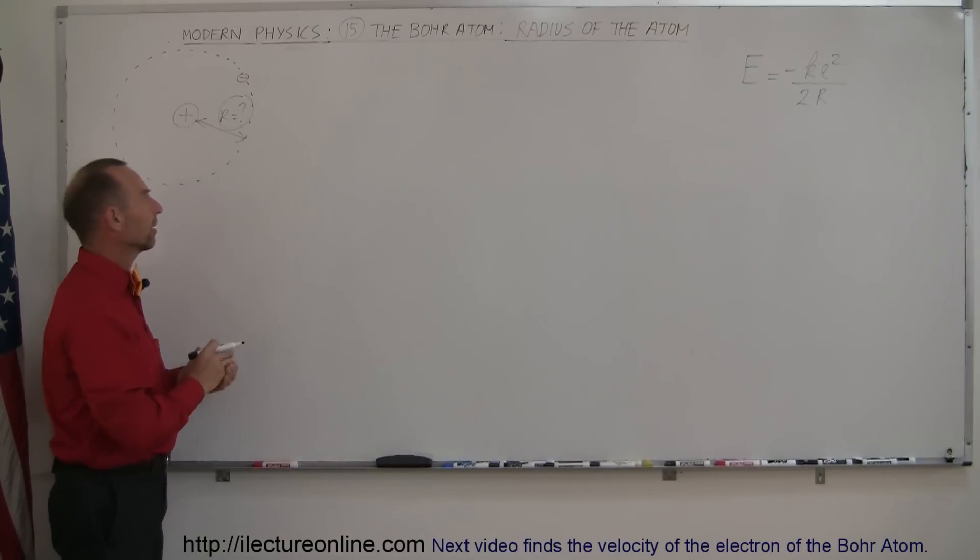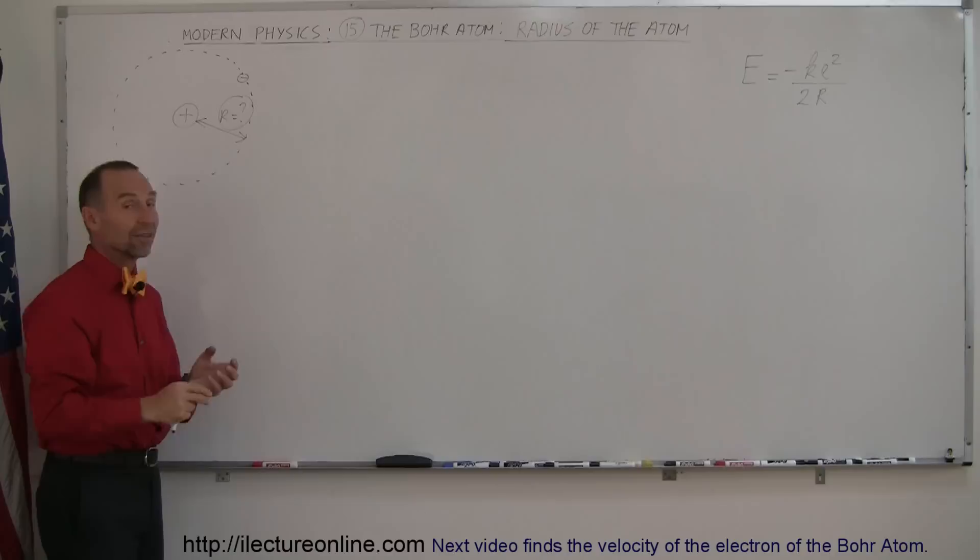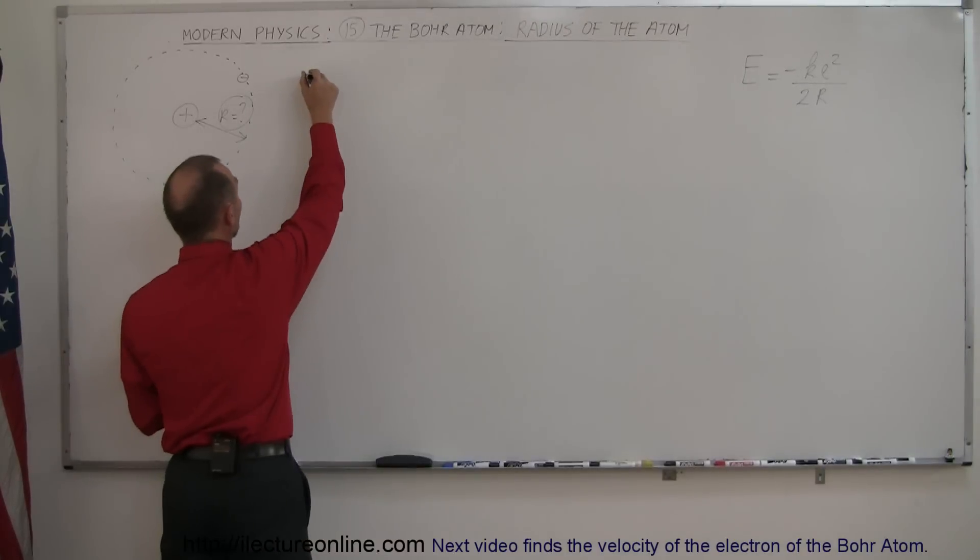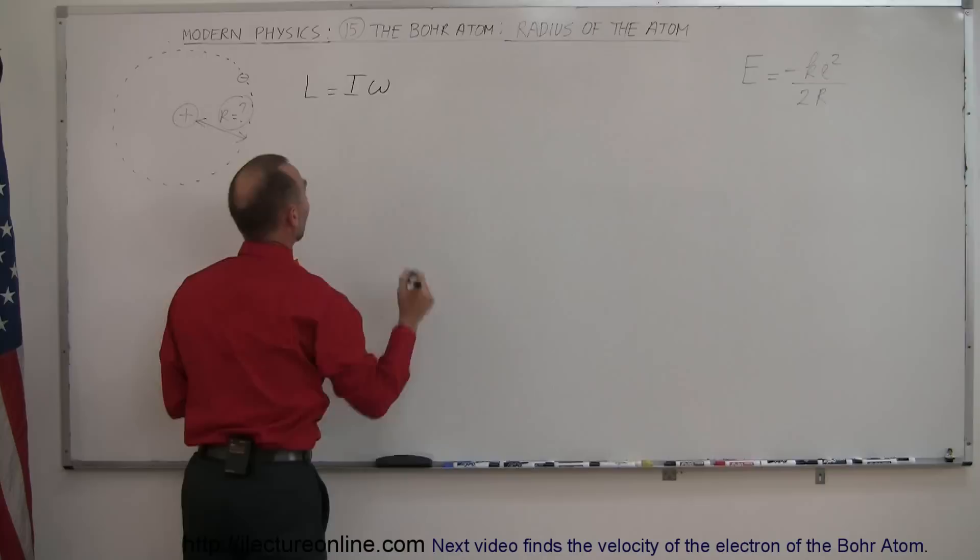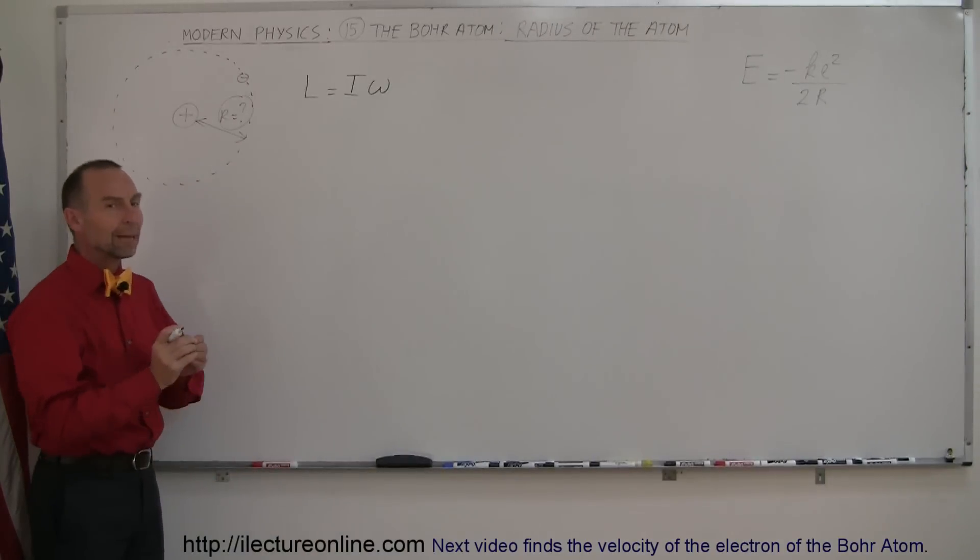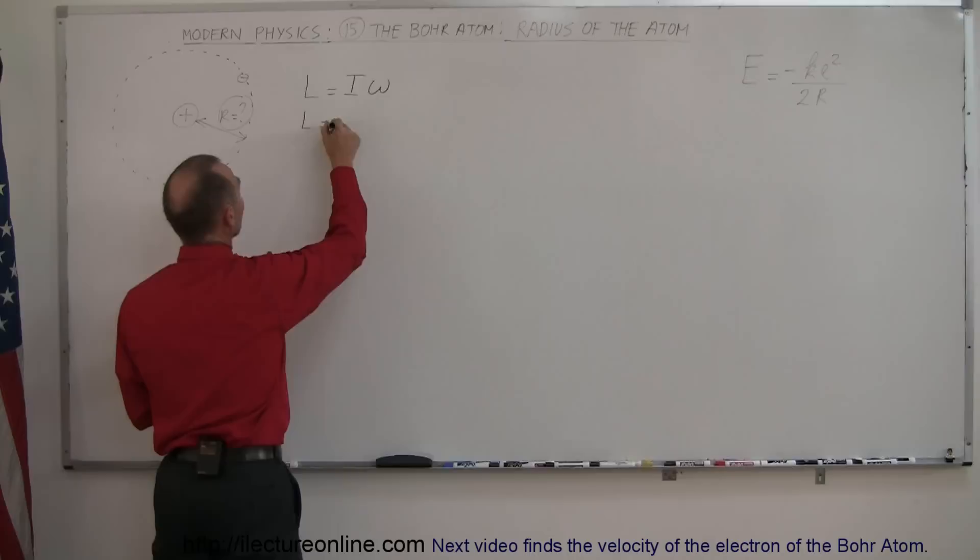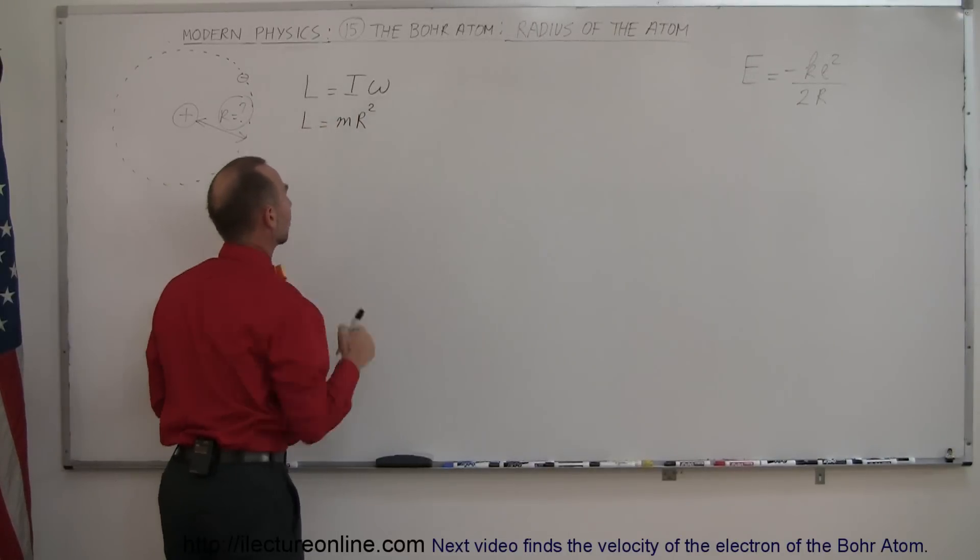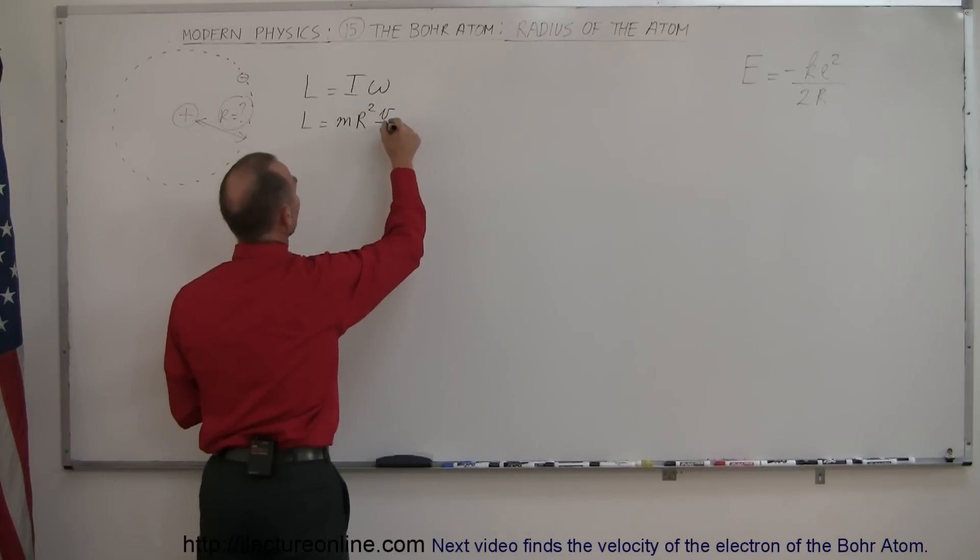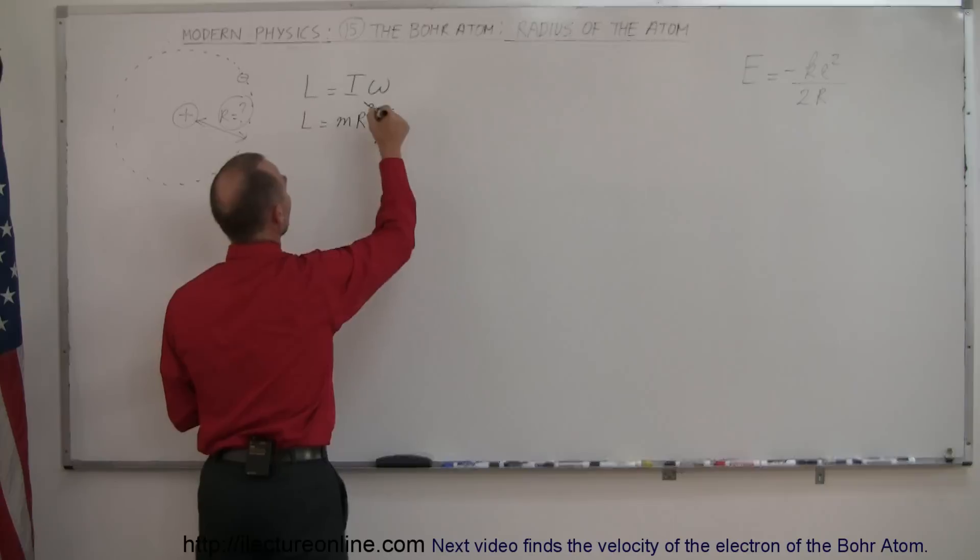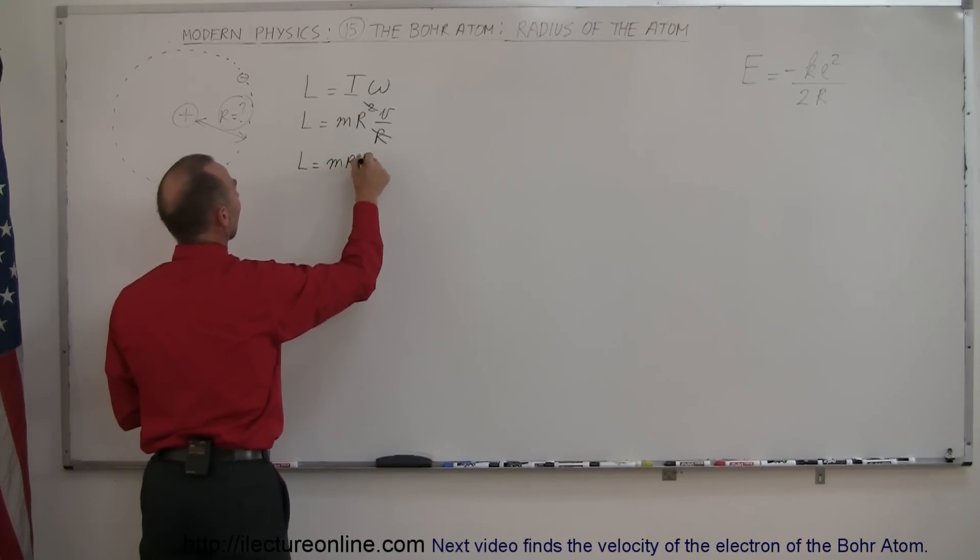The first assumption was that since the electron is like a point mass that goes around in a circle, it has angular momentum. The definition of angular momentum is L equals the moment of inertia I times the angular velocity ω. For a point mass, I is mr², so L = mr²ω. And ω is v/r, so this r cancels out and we have L = mrv.